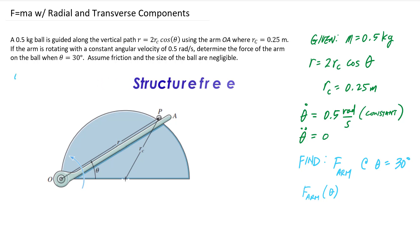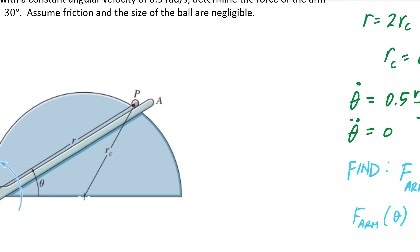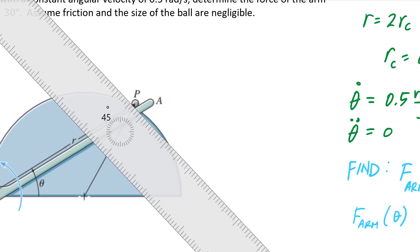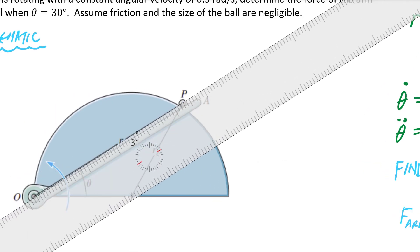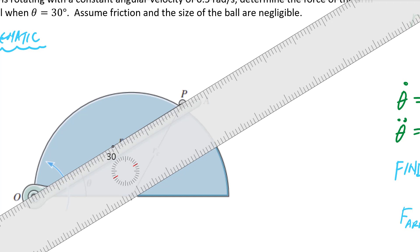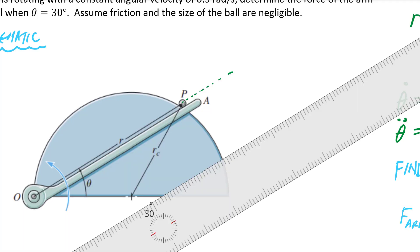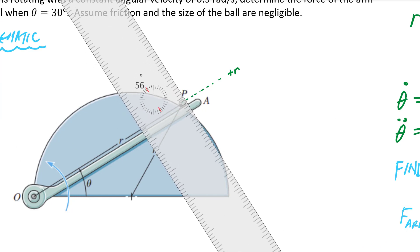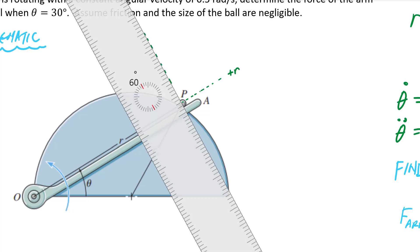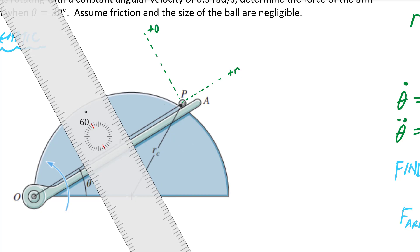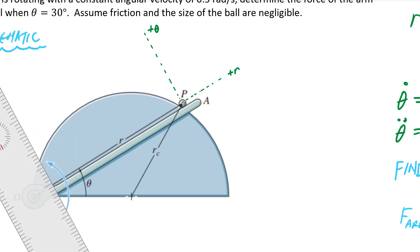In this schematic, I've got particle P drawn at the instant theta equals 30 degrees. One of the first things we want to identify is the positive radial and transverse directions. The radial direction goes from the origin through the particle itself, so this is plus-r. Then 90 degrees to that, in the direction of the rotating theta, is the positive transverse direction — plus-theta, generally pointing up this way.